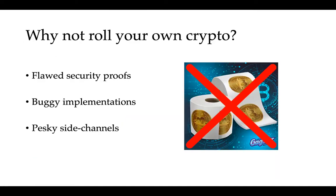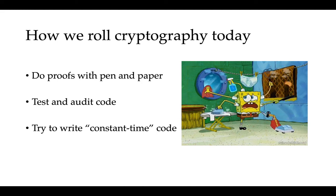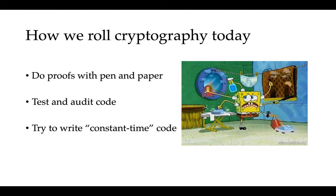Cryptography is difficult to get right. Errors in security proofs have led to high-profile design flaws, implementation bugs are regularly found in widely used libraries, and side channels can inadvertently leak secret data. Unfortunately, the way we roll cryptography today is partially to blame.